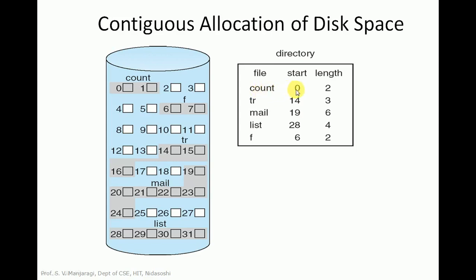For the file count, the starting block is 0 and the length is 2. So block number 0 and block 1 are allocated to count — two contiguous blocks starting from zero. The next file is cr, with starting block 14 and length 3. So blocks 14, 15, and 16 are allocated to cr in a contiguous manner. The next file is mail, with starting block 19 and length 6, so blocks 19, 20, 21, 22, 23, and 24 are allocated to mail.